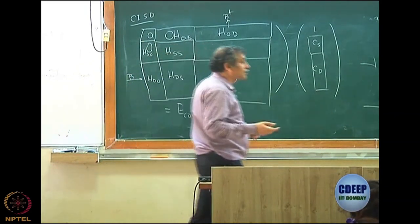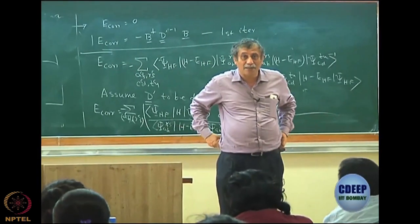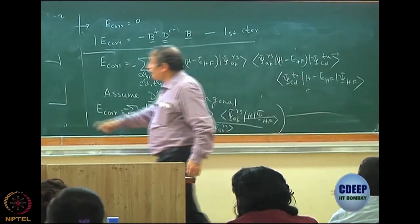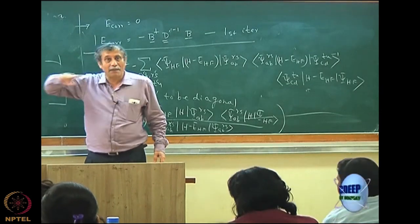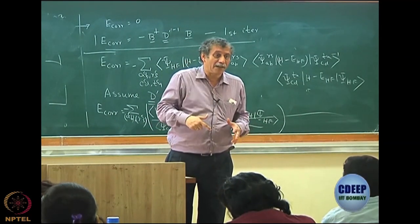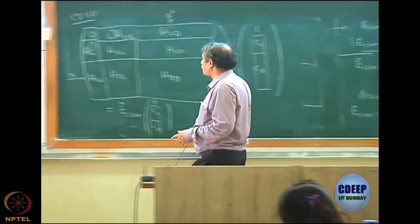So the question that you should ask: then why should I do CISD? Why should I not be happy with CI doubles? The answer is no, because when I calculate C then you will see the changes will take place. Because my generic expression is B dagger C, but what is the value of C? If that is different, then correlation energy will be different, so that you will see for the next set of equations.